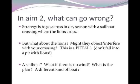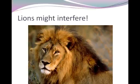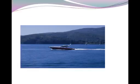These are alternative approaches or pitfalls that will influence your ability to get across. So lions might interfere, or there's a motorboat — maybe that's a better way to go across.